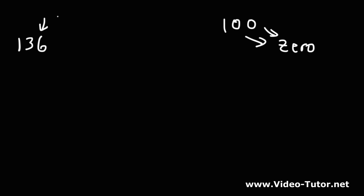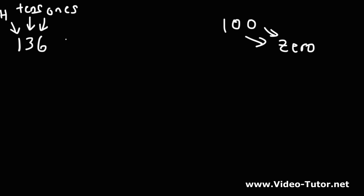The six is in the ones place, the three, the second digit, is in the tens place, and the third digit is in the hundreds place. So we're going to either keep the one or round it up to a two, giving us two options. To round 136 to the nearest hundred, we either round it down to 100 or round it up to 200.